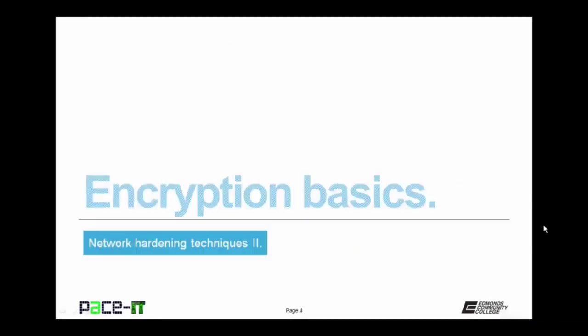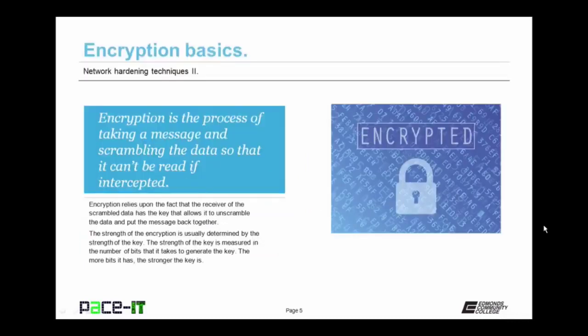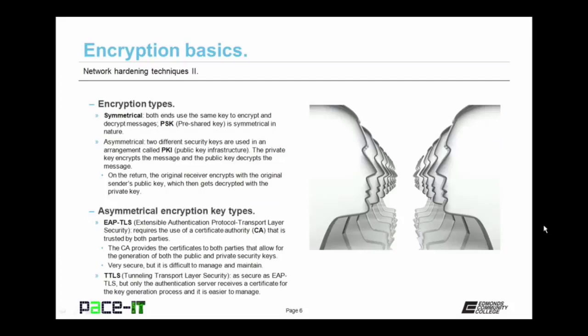I'm going to begin by talking about encryption basics. Encryption is the process of taking a message and scrambling the data so that it can't be read if it gets intercepted. Encryption relies upon the fact that the receiver of the scrambled data has the proper key that allows it to unscramble the data and put the message back together. The strength of the encryption is usually determined by the strength of the key, which is measured in the number of bits that it takes to generate the key. The more bits, the stronger the key.